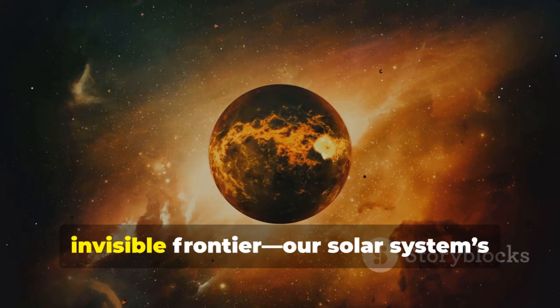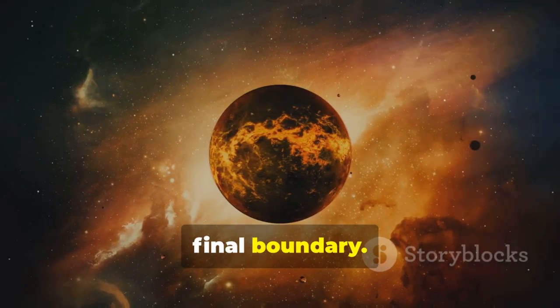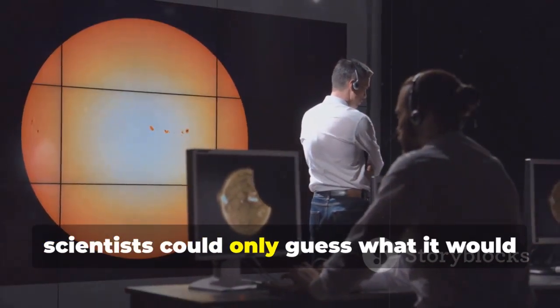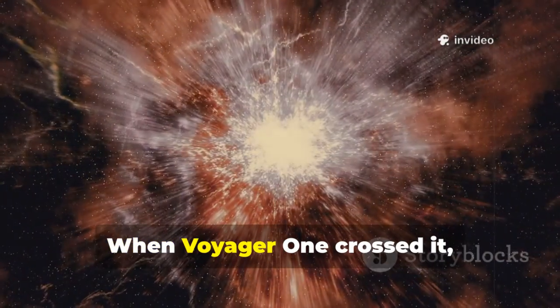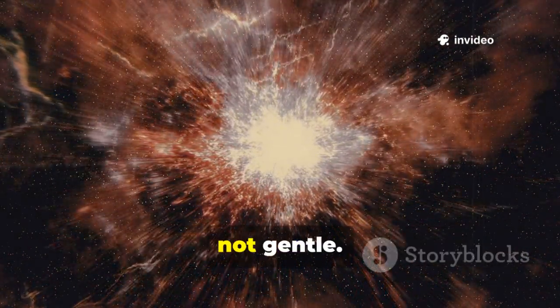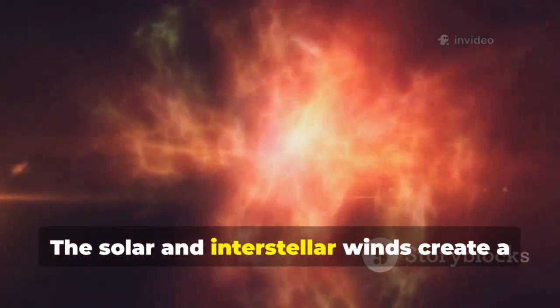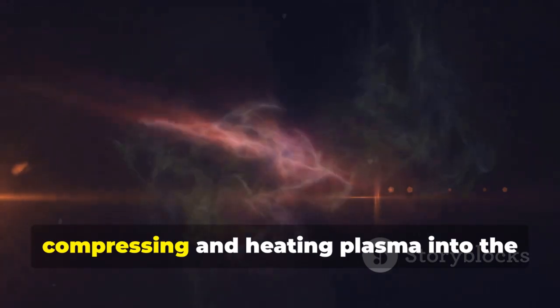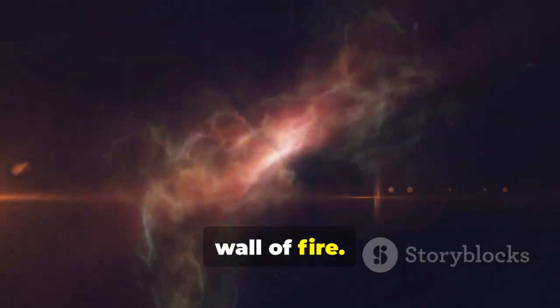It's a turbulent, invisible frontier, our solar system's final boundary. For years scientists could only guess what it would be like. When Voyager 1 crossed it, we learned the collision zone is violent and energetic, not gentle. The solar and interstellar winds create a cosmic traffic jam, compressing and heating plasma into the wall of fire.